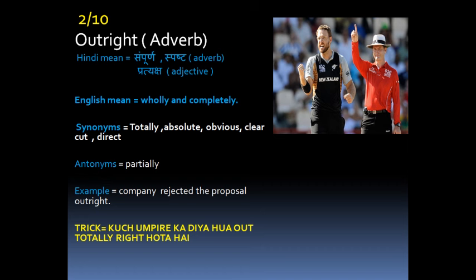The synonyms of outright are totally, absolute, and obvious. The antonym of outright is only one: partially. The example is: 'Company rejected the proposal outright' — meaning the company completely rejected the proposal.